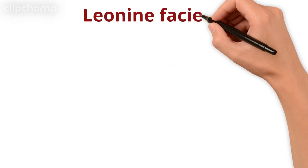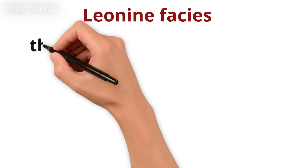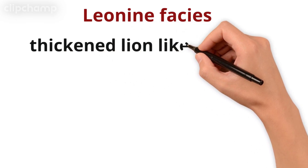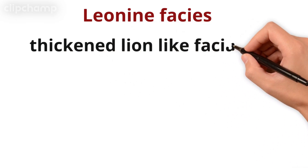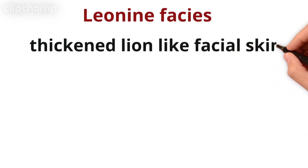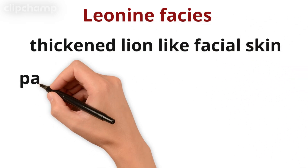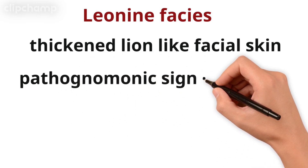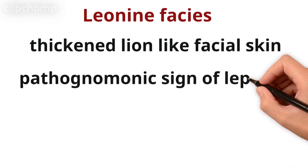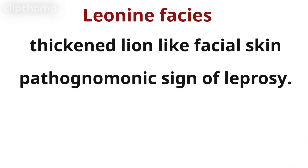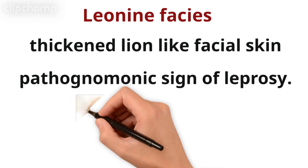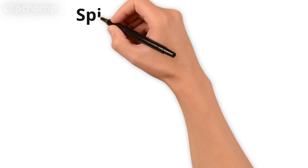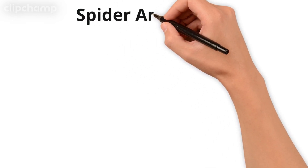Next is Leonine facies. It is actually a thickened, lion-like facial skin appearance. It is the pathognomonic sign of leprosy. It is the most important and most common sign you see in these patients. This is the pathognomonic sign of leprosy.